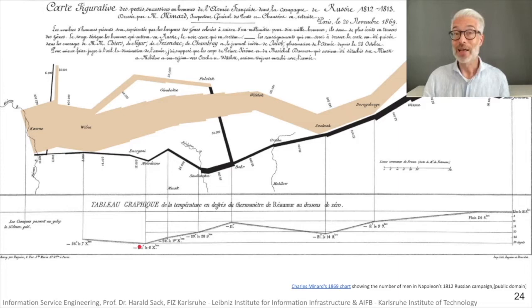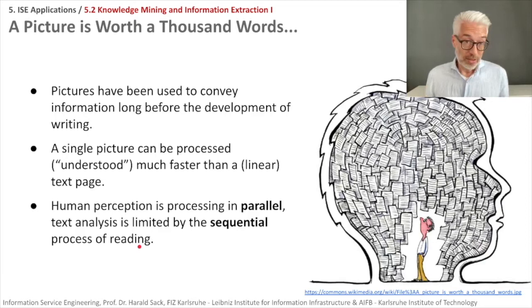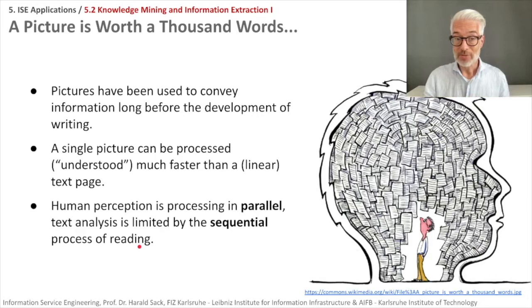This can be easily done by data visualization in the form of an infographic, as in Charles Minard's famous chart. Pictures are worth a thousand words — they have been used to convey information long before writing. A single picture can be processed and understood much faster than a text page, because in a text page information is ordered linearly. Your perception processes in parallel — you see a picture and immediately grasp its content. With a page of text you have to sequentially read it, limiting your analysis.